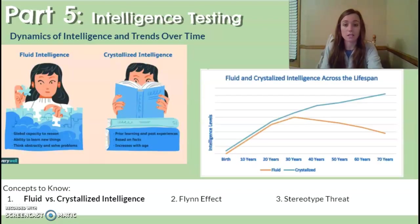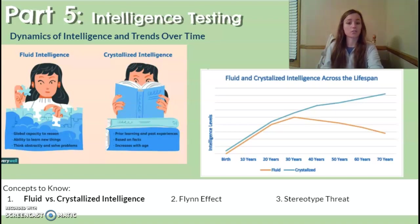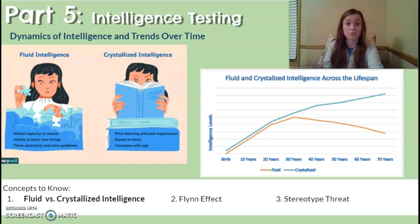Now we move into the dynamics of intelligence and how it changes over time. There are two types: fluid intelligence and crystallized intelligence. Fluid intelligence refers to reasoning and the ability to think abstractly, such as problem solving — this actually declines with age. Crystallized intelligence is your accumulated knowledge and information, heavily dependent on your experiences, exposure, and vocabulary throughout life — and this tends to grow with time.